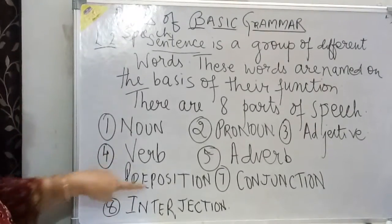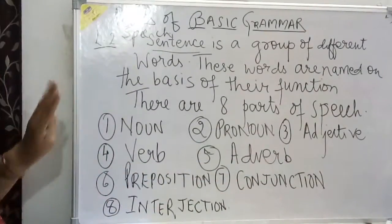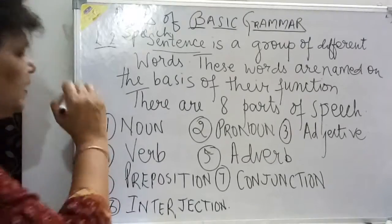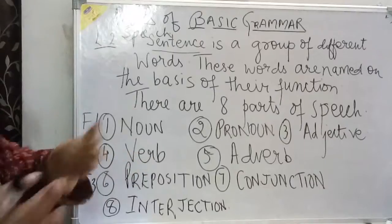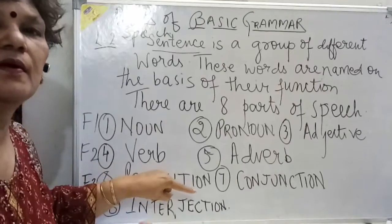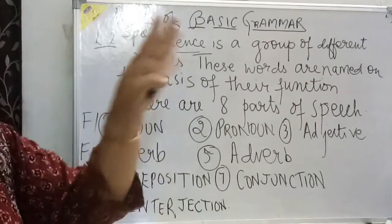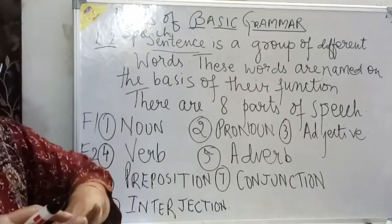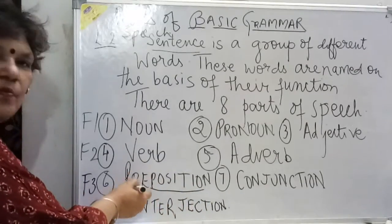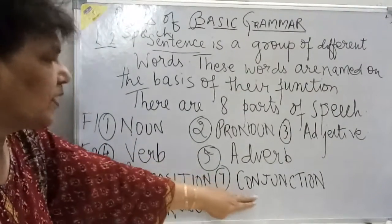Now we are at number 6: prepositions, conjunctions, and interjections. I have kept these three separately — this is called family 1, this is called family 2, and this is called family 3. These three families are connected. A preposition comes before a noun and tells us about the noun's position in the sentence — the relationship between one noun and another.